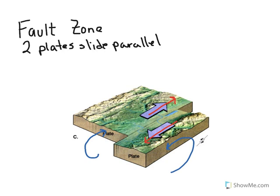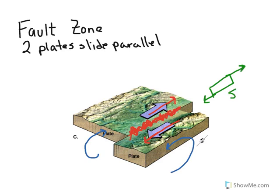One thing to keep in mind: illustrations like this often make it look like there is a clearly defined, nice straight crack between these two plates, when in reality there is no clearly defined crack. There are rocks that go across that boundary. The boundary itself is rarely straight — it's usually a much more irregular shaped boundary. So when these plates are in motion, they are moving against all of this material in between, and that material in between is getting pulled in two directions. And that's called a shear force.